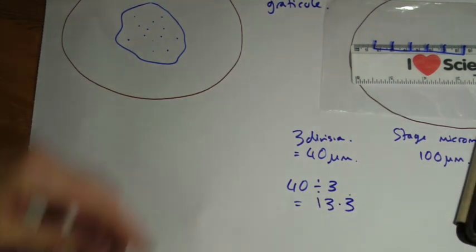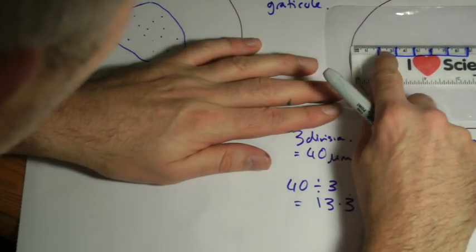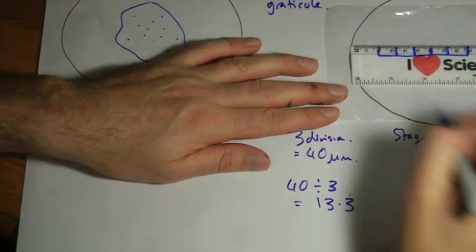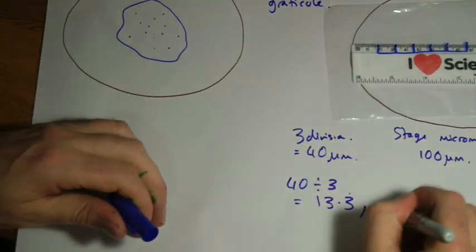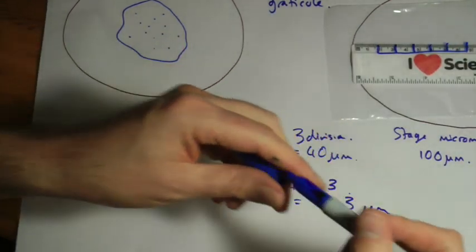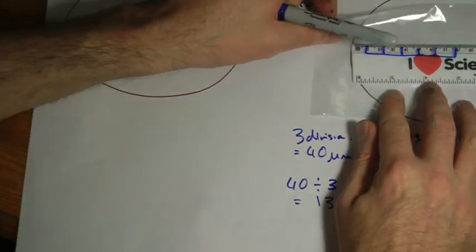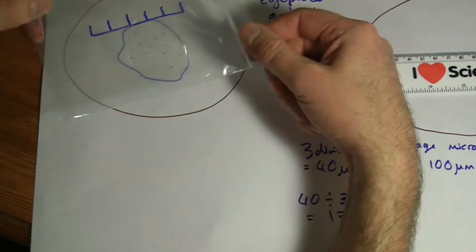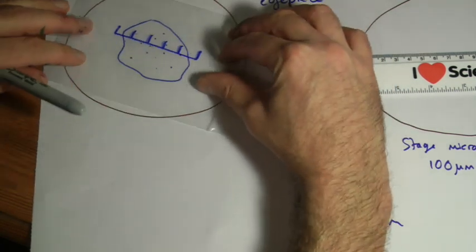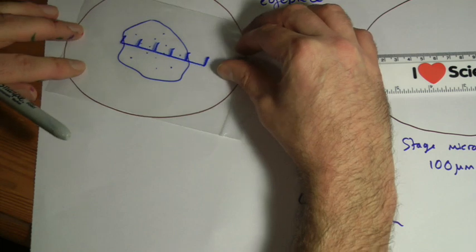And does that kind of look right? Does it look like one of these might be? Yeah, it does actually. So I need to find two that line up and then I divide it. So one division on here is now 13.3 micrometers. Now this thing I can move. So I can move this across now because it's in the eyepiece. I can put my sample underneath and I can look until it lines up.